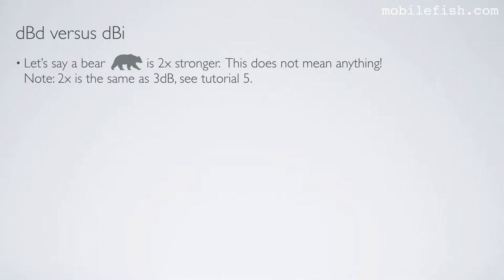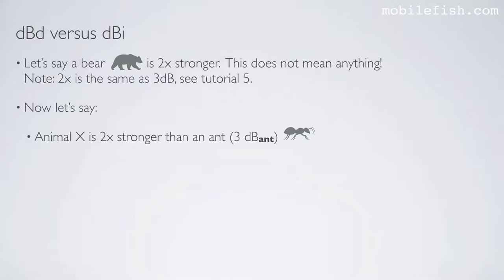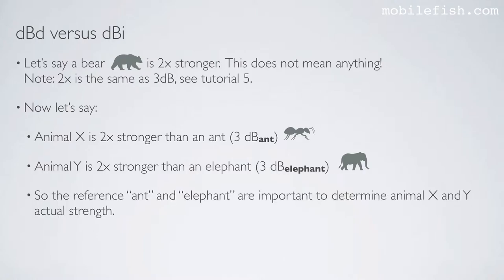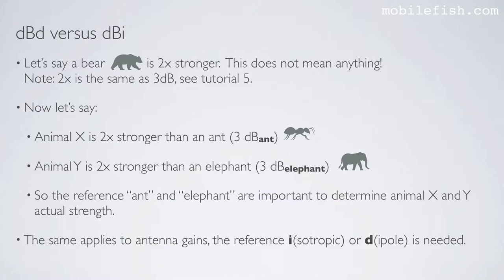Let's say a bear is 2 times stronger — this does not mean anything. Note: 2 times is the same as 3 dBi. Now let's say animal X is 2 times stronger than an ant, which means 3 dB stronger compared to an ant. Animal Y is 2 times stronger than an elephant, which means 3 dB stronger compared to an elephant. So the reference — ant or elephant — is important to determine the actual strength of animal X or Y. The same applies to antenna gains: the reference i for isotropic or d for dipole is needed.